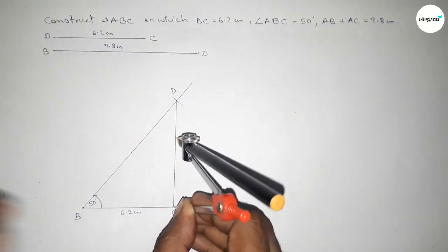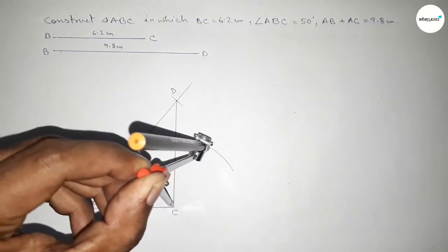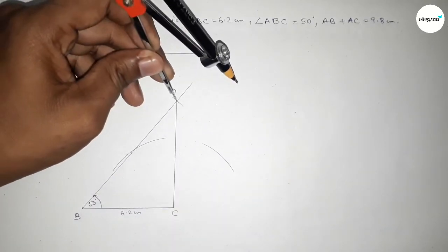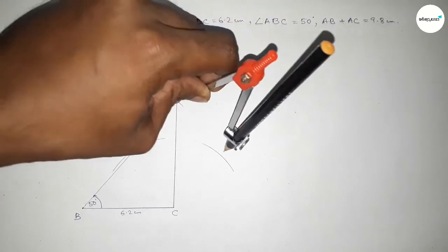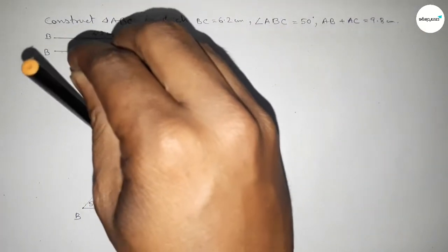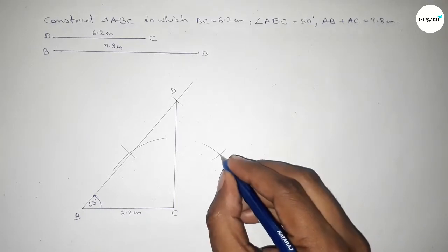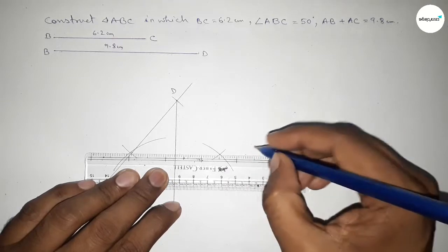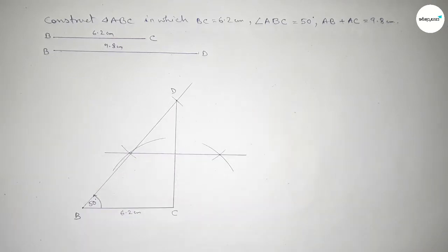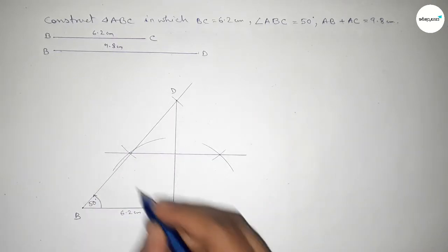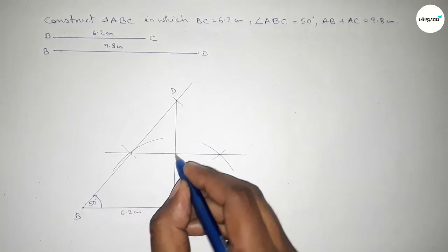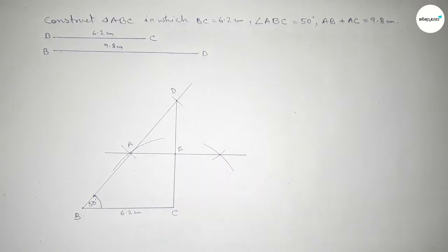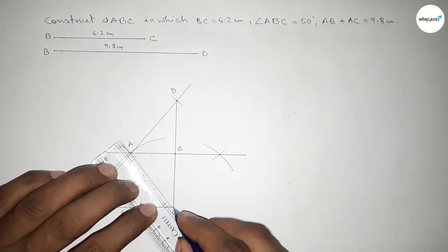Now we have to bisect the line CD. Putting the compass here, taking greater than half of CD, and drawing arcs on both sides. Both curves intersect at two points. Now joining this bisector, which meets line BD at a point. Taking point A here and point E here. Now joining A and C — so triangle ABC is the required triangle.